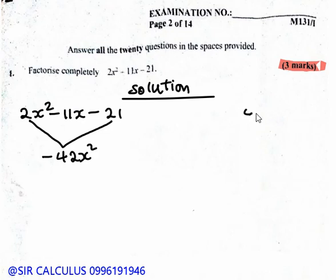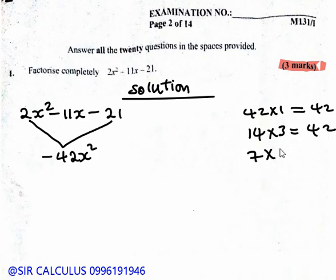It can be 42 times 1, then we get 42. And 14 times 3, we get 42. And 7 times 6, we get 42. And 21 times 2, we get 42. So we have these product factors: 42 times 1, 14 times 3, 7 times 6, and 21 times 2.